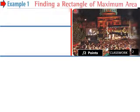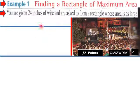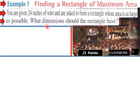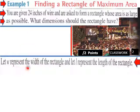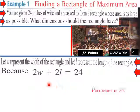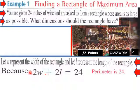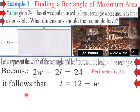Going right into an example — finding a rectangle's maximum area. You're given 24 inches of wire and asked to form a rectangle whose area is as large as possible. Let w represent the width and l represent the length of the rectangle. Because the perimeter is 24, we have 2w plus 2l equals 24.